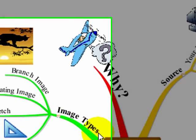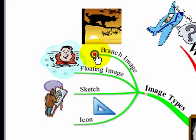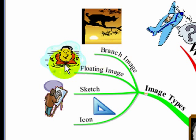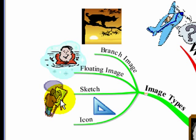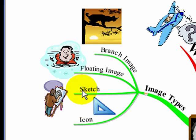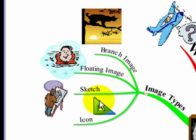Now, there are different types of images. You've got branch images — these are images that are actually linked to and attached to a particular branch. You've got floating images, which are images you can move around the map. There are sketches, so you can actually draw your own. And there are little icons that you can add. We're not going to go into any depth on the last two; we're going to focus on branch images and floating images.